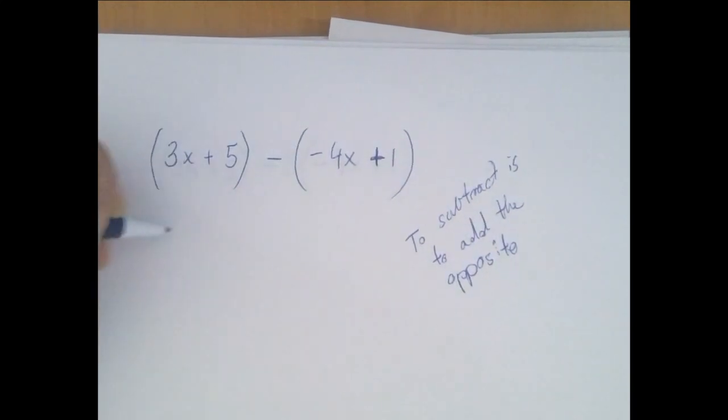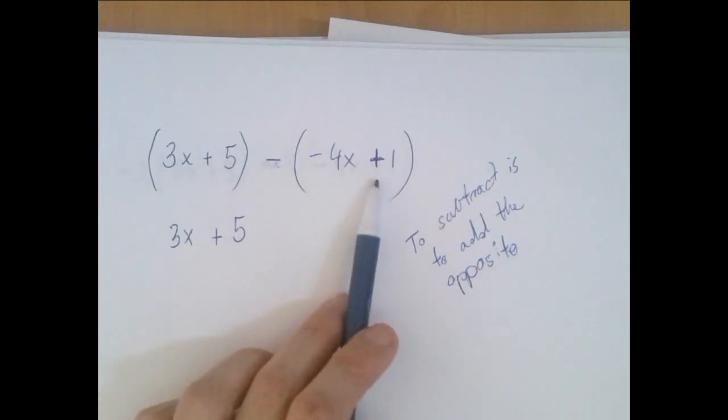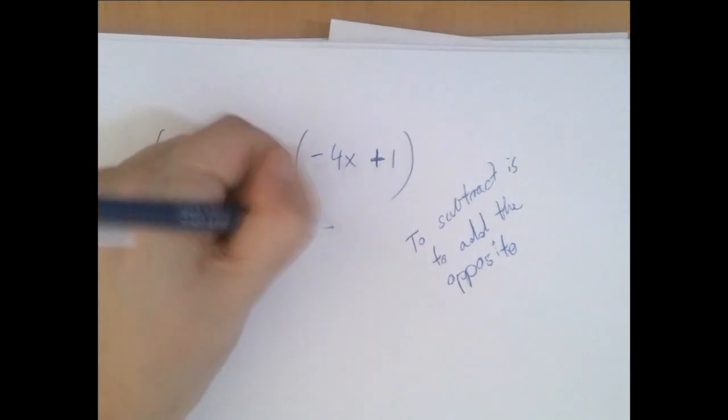So when we add, we just drop parentheses and combine like terms. So this is going to become a plus, this is going to become a minus. So we're going to have plus 4x minus 1.